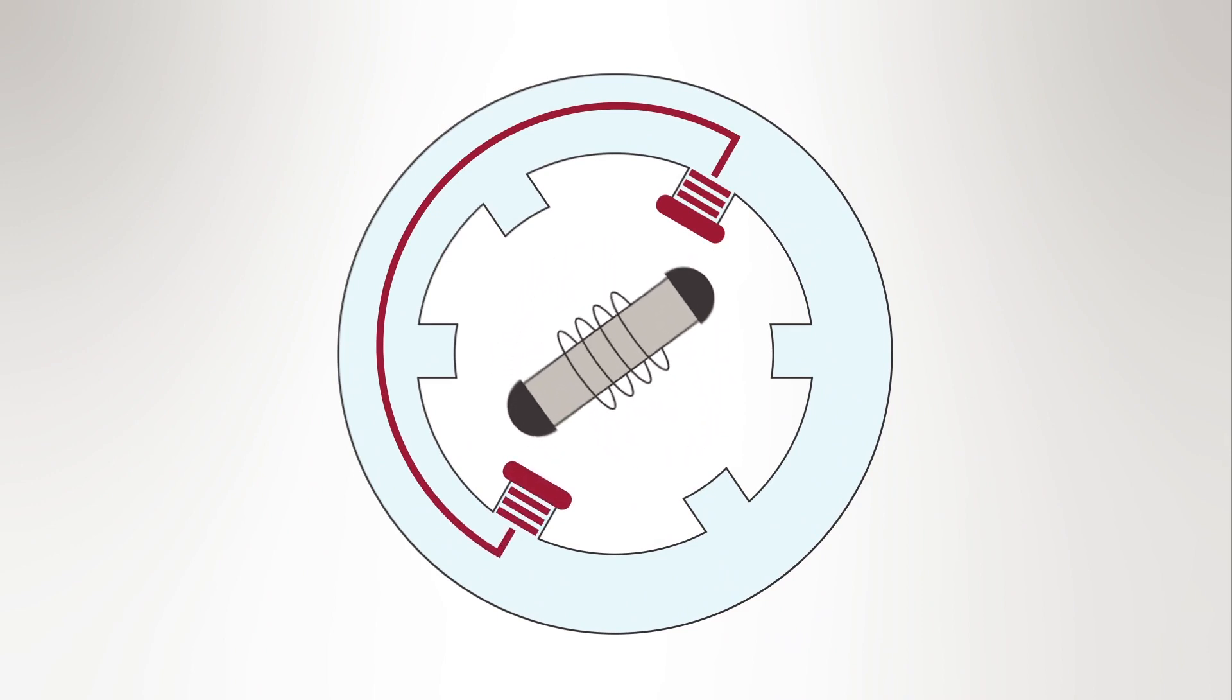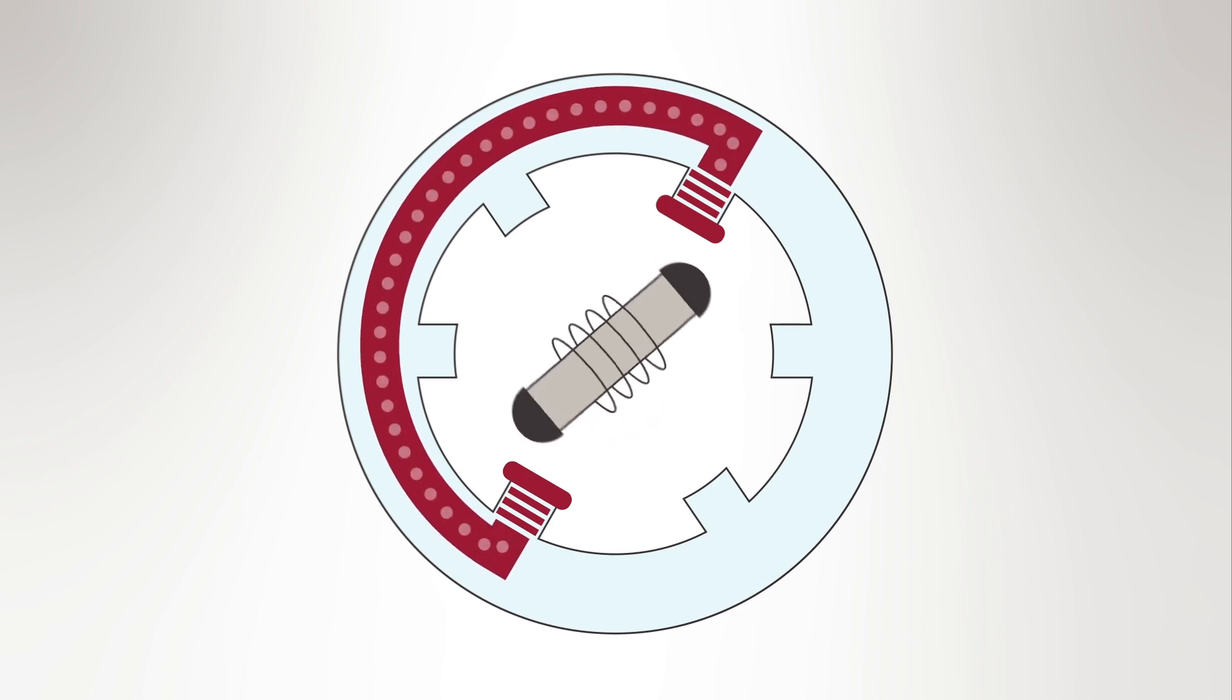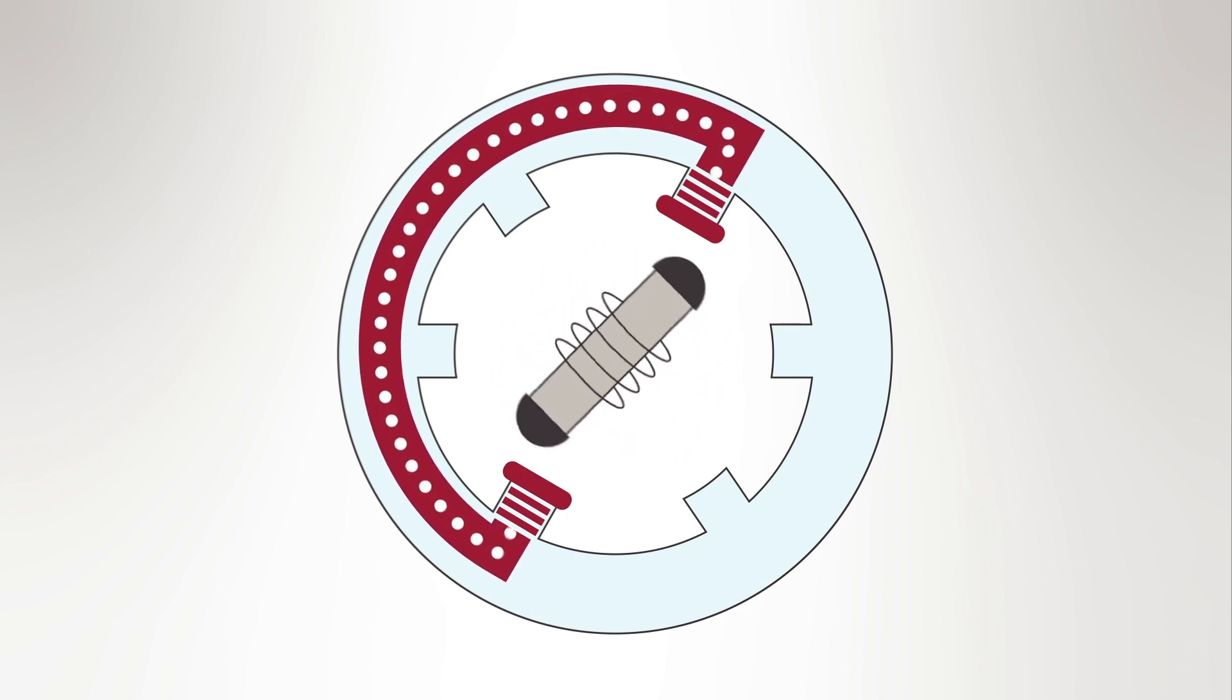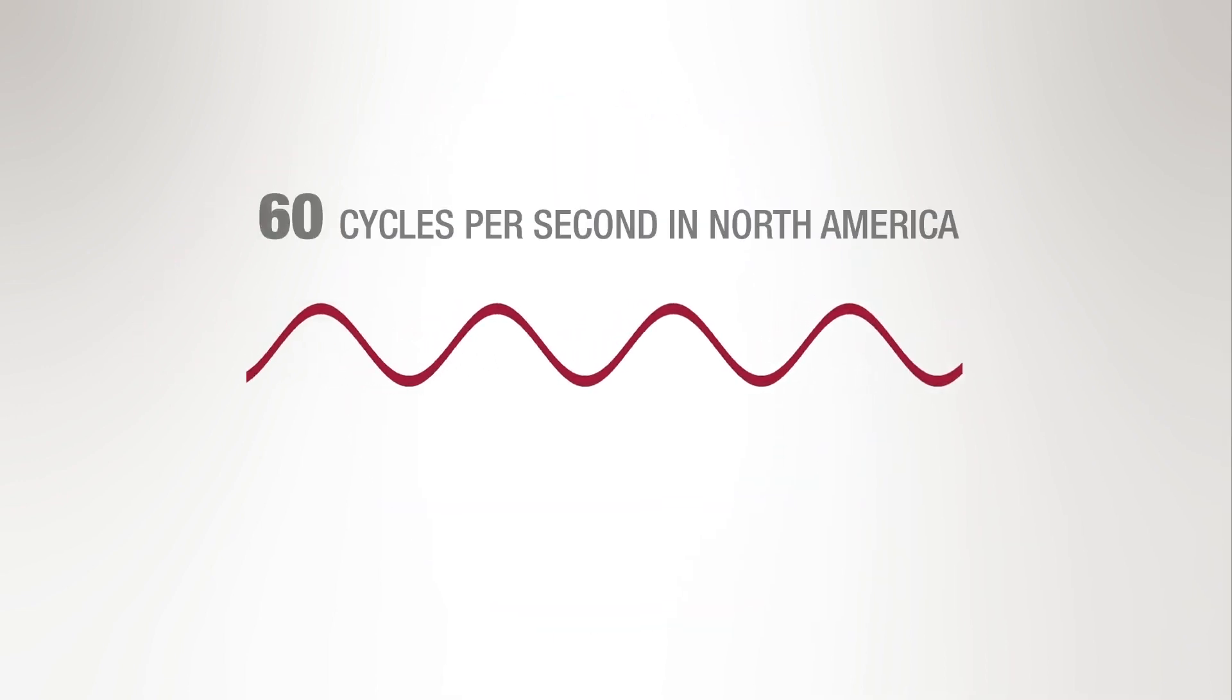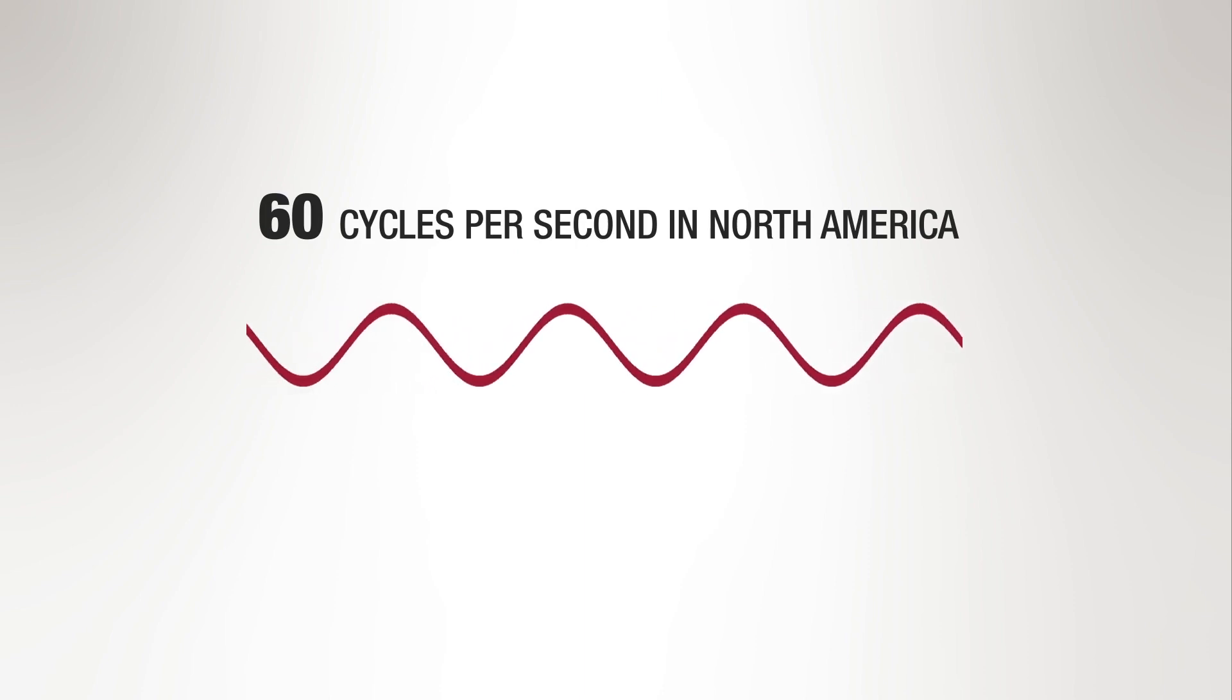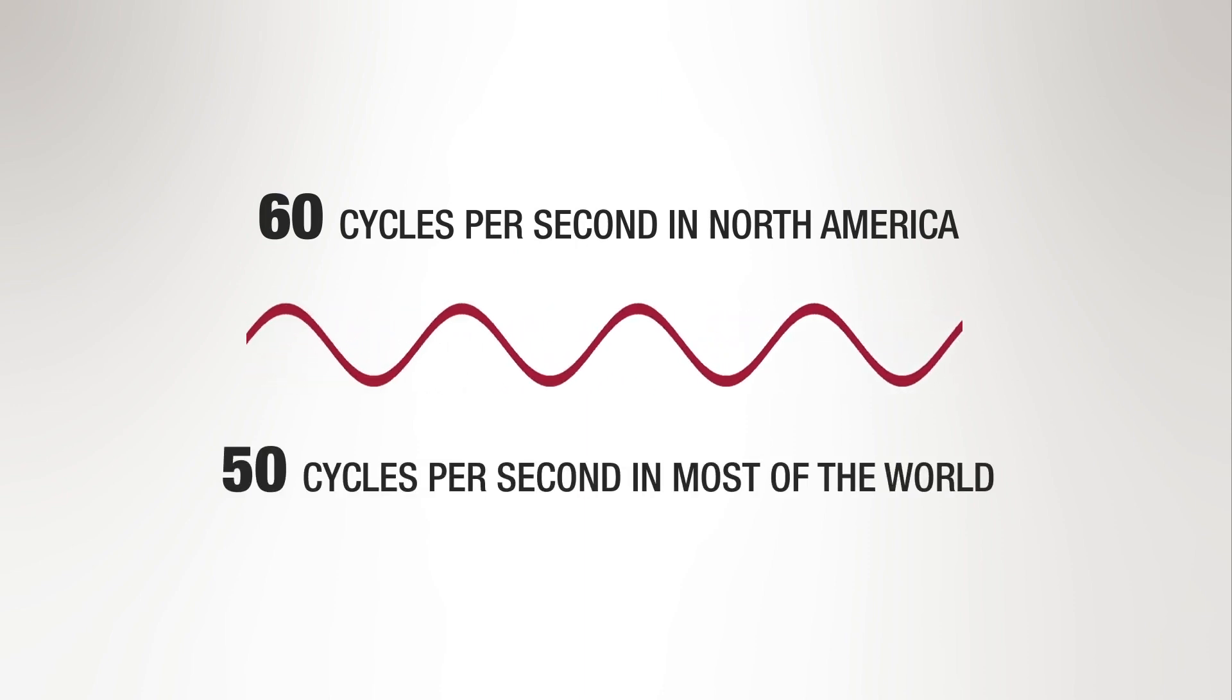As the rotor turns through the magnetic field, electrons move back and forth, creating alternating current that is transmitted to power users. The generator rotates at a speed that produces power with a frequency of 60 cycles per second in North America and 50 cycles in other parts of the world.